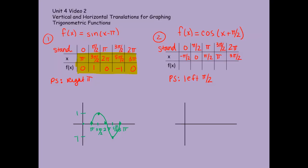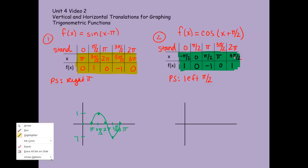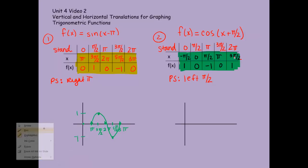My cosine graph has different f of x values because it does not start at 0. It actually starts at positive 1, goes to 0, negative 1, 0, and back to positive 1. So this graph will already look different than the sine graph because it's cosine. So once again I'm going to highlight what we're actually going to graph — these are the points we're going to graph.